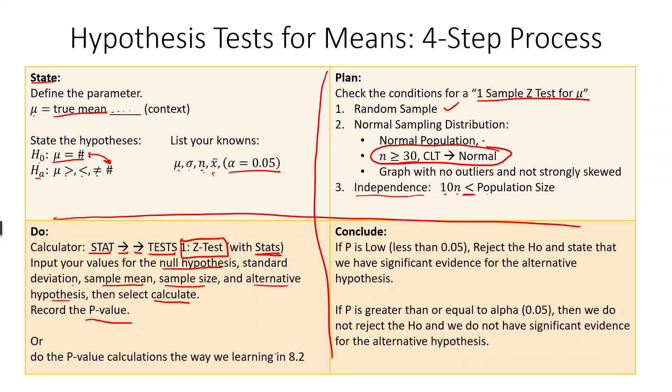Or we can do it the long way, like we did in 8.2. Either way is fine. And then we do our conclusion. If P is low, and by low, we mean less than 0.05, then we reject the null hypothesis. So if P is low, reject the H0, and then we state that we have significant evidence for whatever the alternative is. If P is greater than or equal to 0.05, then we do not reject the null hypothesis. We do not have significant evidence for the alternative at that point.